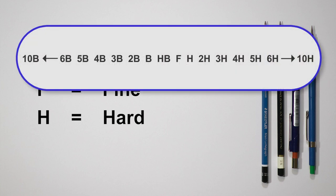The two groups are numbered to describe their relative hardness or blackness. The blacks, the B's, range from B to 10B. The higher the number, the softer the lead and the darker it will draw.